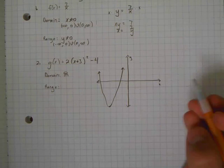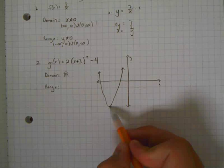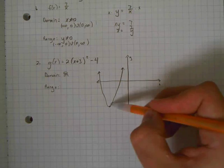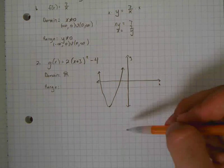Down here at the vertex of the parabola, your y value is negative 4. So the smallest possible y value you have is negative 4. And all the other y values are bigger than that. And this parabola will continue upward forever.